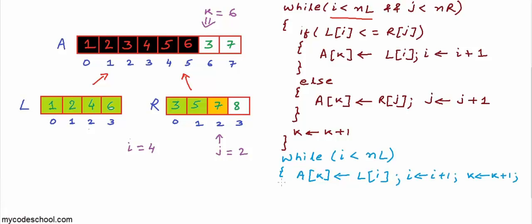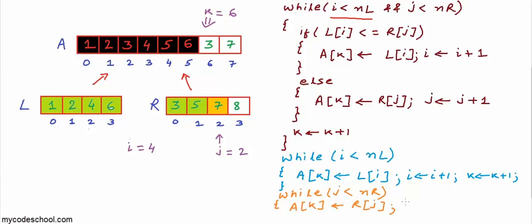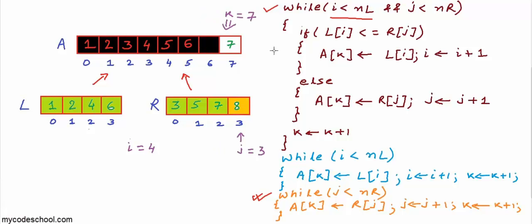Similarly, we write a while loop: while j is less than number of elements in R, fill A[k] with R[j] and increment j and k. Once out of the first while loop, only one of these two while loops will execute because only one sub-array will have leftovers. For this particular example, the third while loop executes because the right sub-array has leftovers. We fill up all the remaining positions and finally we have a sorted arrangement in A.